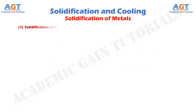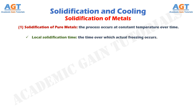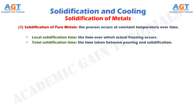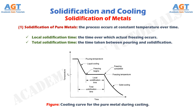1. Solidification of pure metals. The process occurs at constant temperature over time. Local solidification time is the time over which actual freezing occurs. Total solidification time is the time taken between pouring and solidification. This figure shows the cooling curve for the pure metal during casting. The total solidification time is the time from the pouring temperature till the freezing is completed, and the local solidification time is the time from when the freezing begins till the freezing is completed.